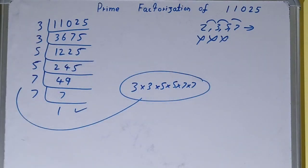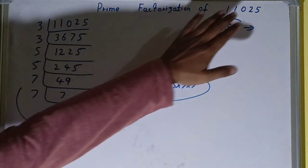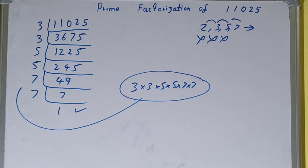Now if you want to check whether it is right or not, you can multiply it, and on multiplying you'll get the number back again. So this was all about prime factorization of the number 11025. If you found the video helpful, please do like, and consider subscribing. Thanks for watching.